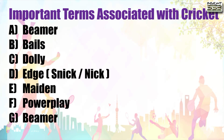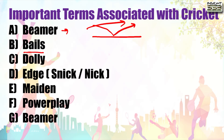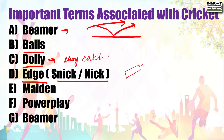Now starting with important cricket terminology. A beamer: when a fast bowler delivers the ball so that instead of touching the ground it goes directly to the batsman - that is a beamer. Bails we have already discussed. A dolly is a very easy catch taken by a fielder. Edge, snick or nick: when the batsman's bat only partially touches the ball and the wicket keeper catches it - that is an edge, snick, or nick. A maiden over is one in which no runs are scored.